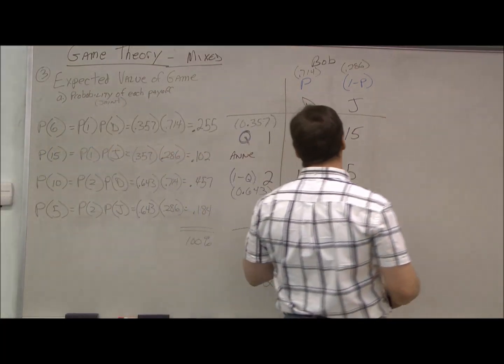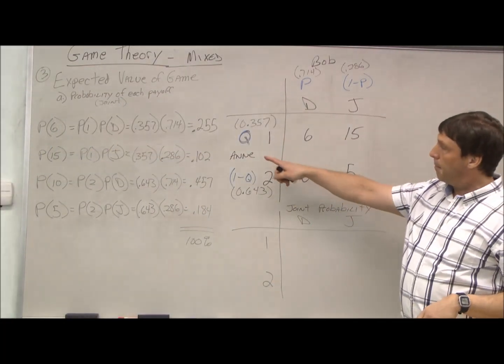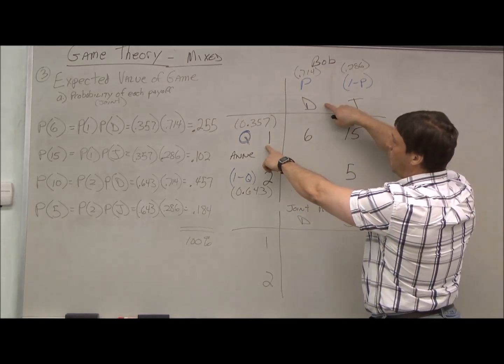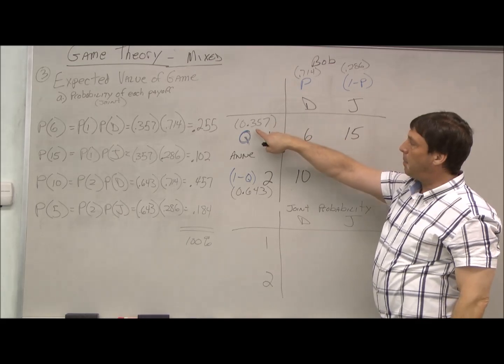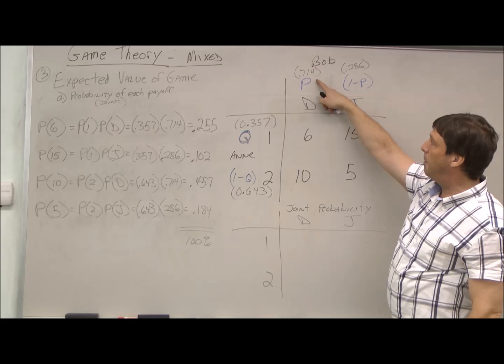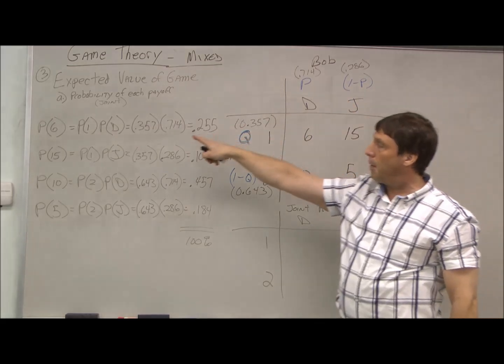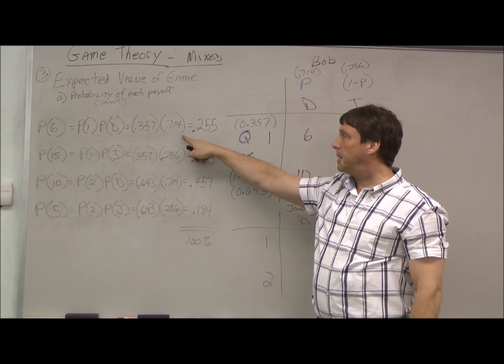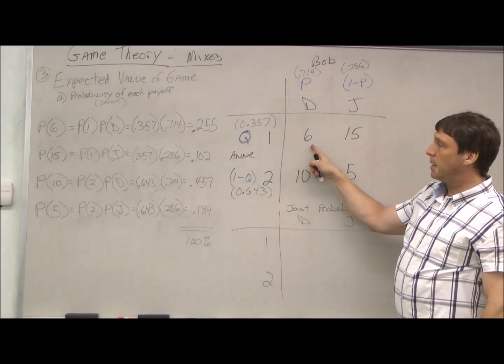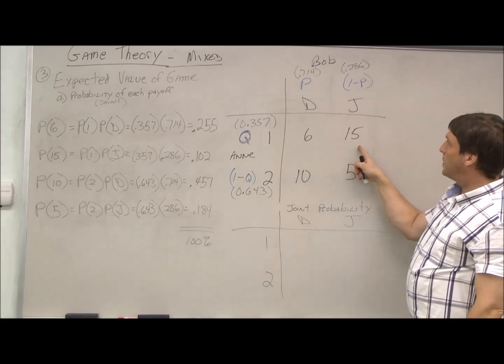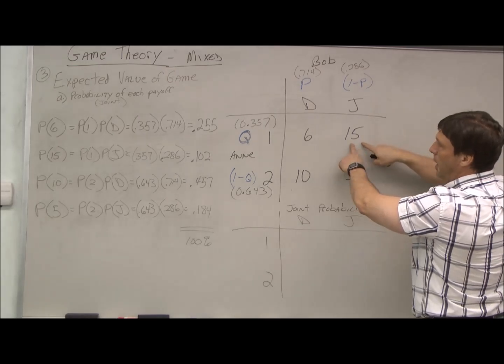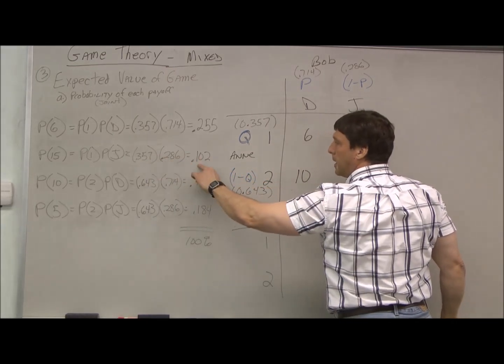To do the joint probabilities, we take the two individual probabilities and multiply them together. Like for the probability of six, that's the intersection of one and D. So the probability of one is 0.357, the probability of D is 0.714, so we multiply those two probabilities together. The probability of six is a little over 25%. We do the same thing for 15, where we multiply one and J, so those two probabilities together, a little over 10%.